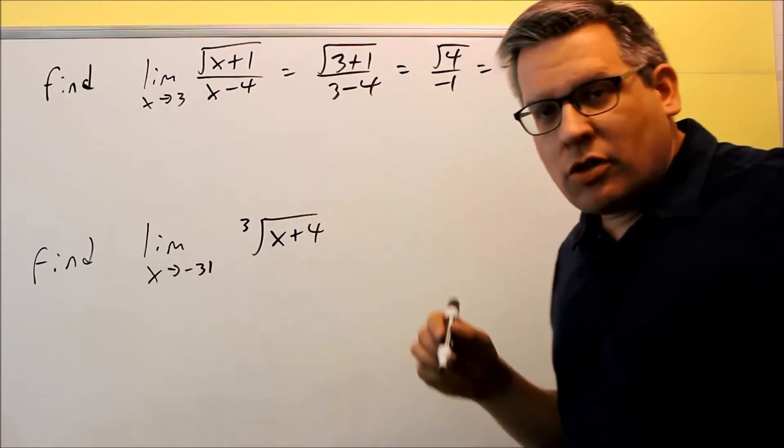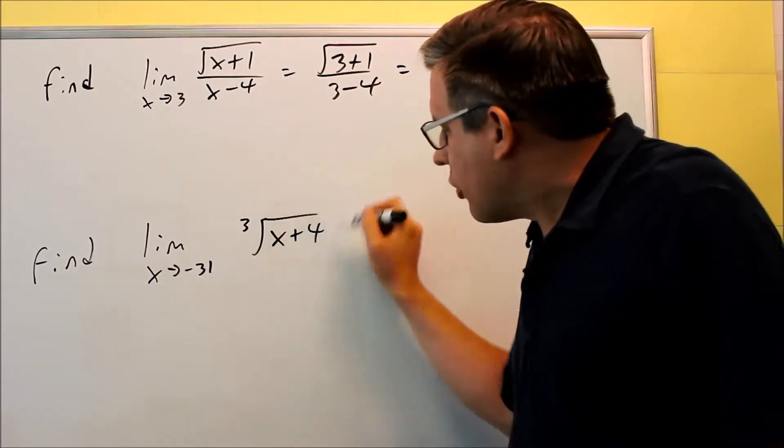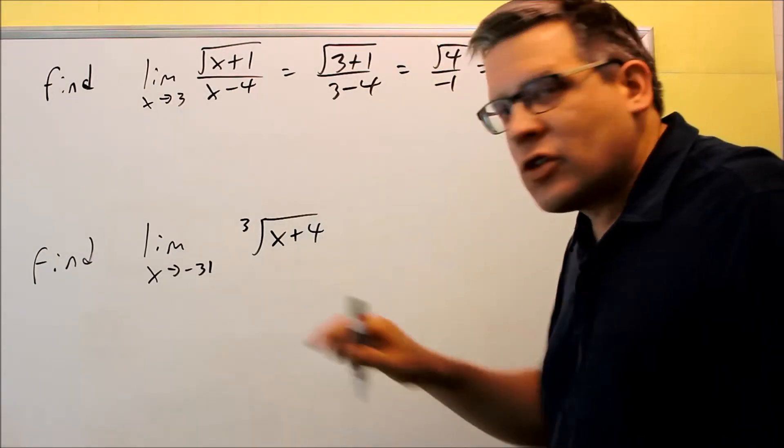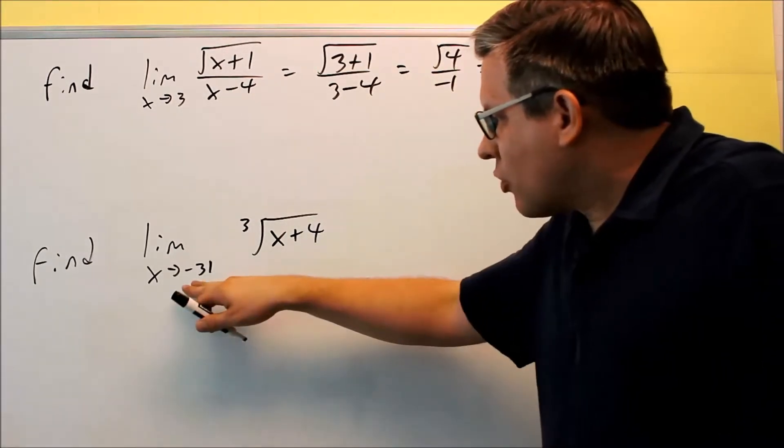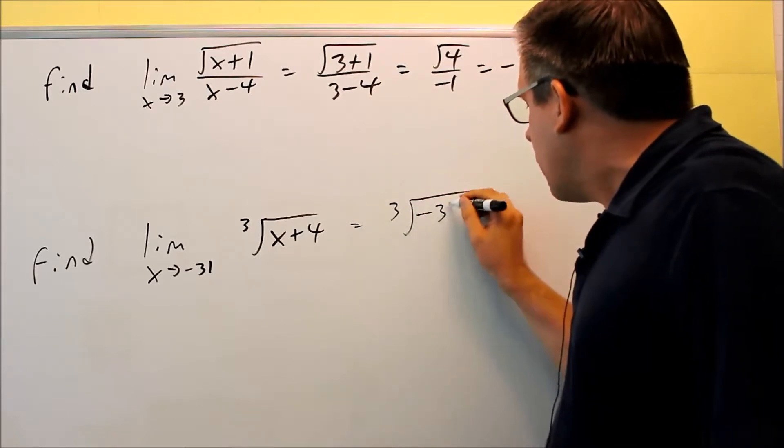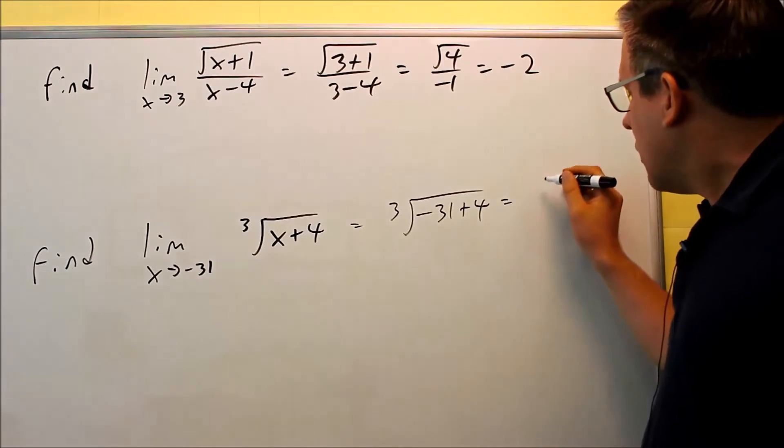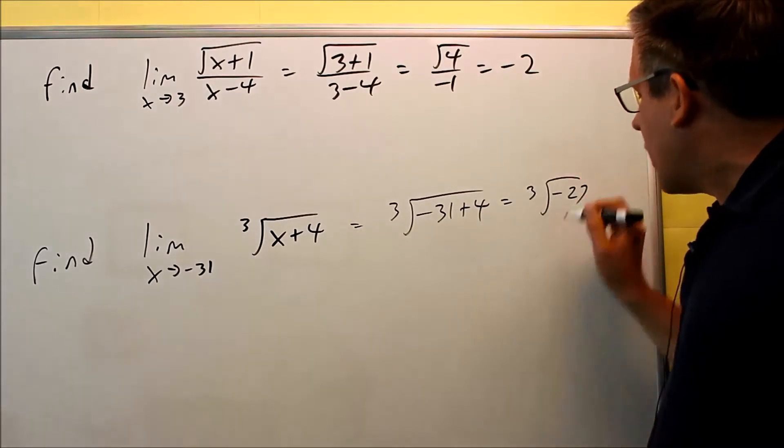Okay, now this one does not have a fraction, so we don't need to worry about dividing by a fraction, but we have to make sure that we can take the root of this particular number. This one, if I plug that in directly, I'm going to do cube root of negative 31 plus 4, and then that's going to give us the cube root of negative 27.